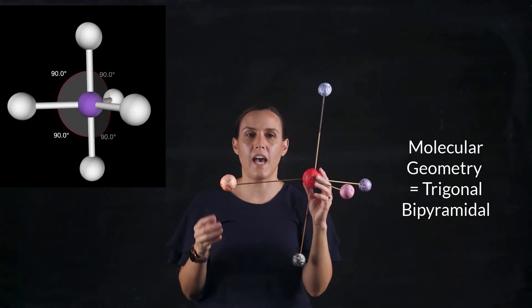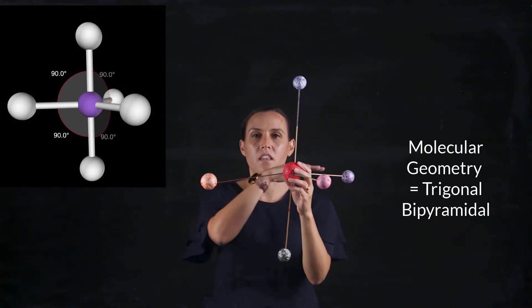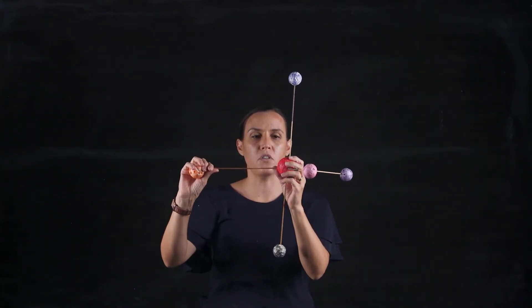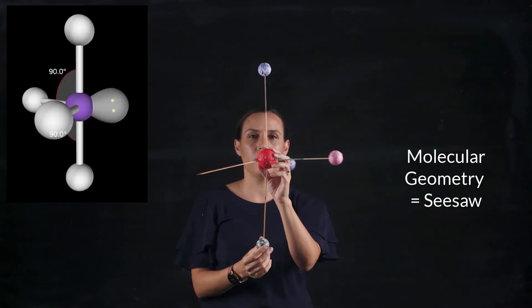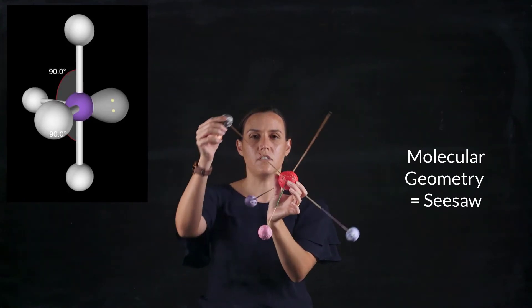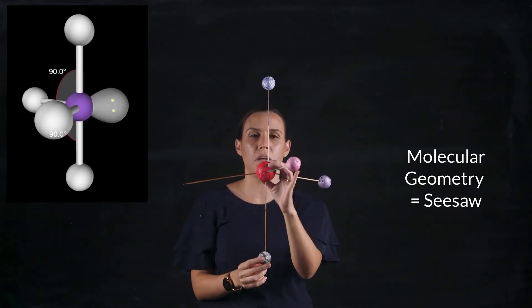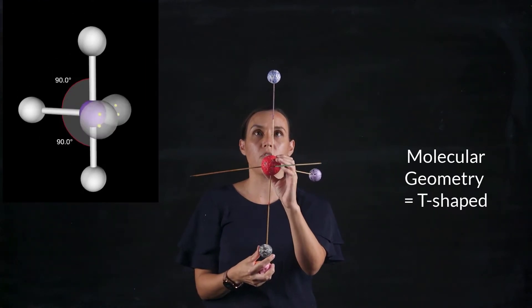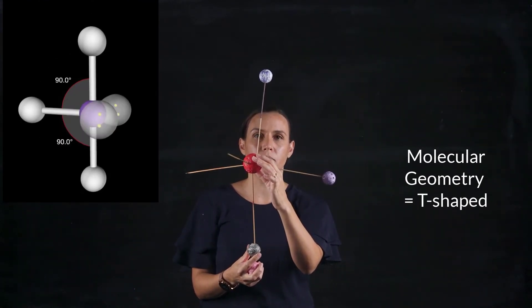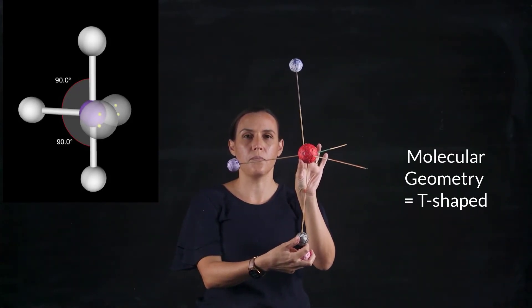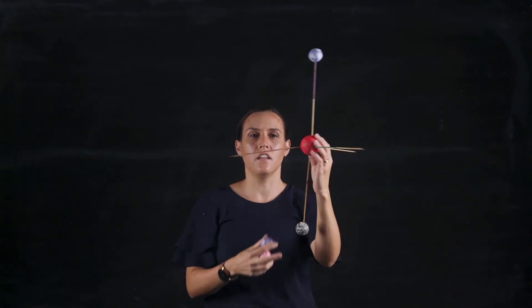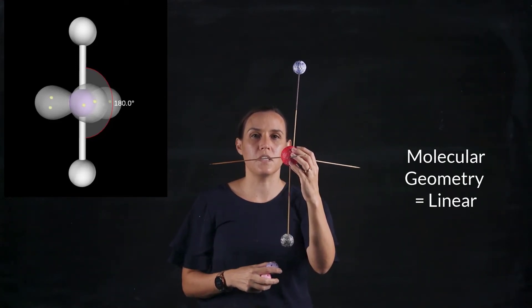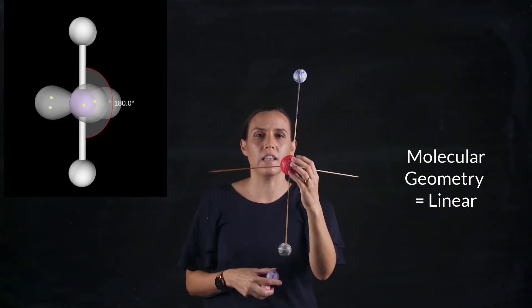Now when you have five groups attached, when lone pairs come in they come in at that middle planar position in the middle. So if I was to replace one of these bonding atoms with a lone pair I would get the seesaw shape — it totally looks like a seesaw or a sawhorse depending on the textbook. If I remove another one, so I have two lone pairs and three bonding pairs, this is the T-shape. And the next one again in that middle position would give your linear again — three lone pairs accommodate that central position and you have your two bonding top and bottom, giving you a linear conformation.